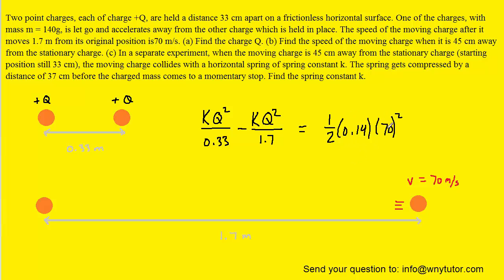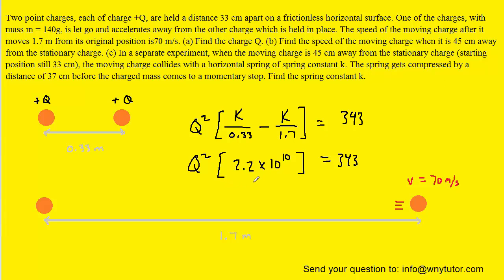We can pick up our calculators and simplify the right-hand side, which gives us 343. The left-hand side is more complicated. We can factor out Q squared, then simplify what's in the brackets. Remember that K has a value of roughly 8.99 times 10 to the ninth. You should get roughly 2.2 times 10 to the tenth.